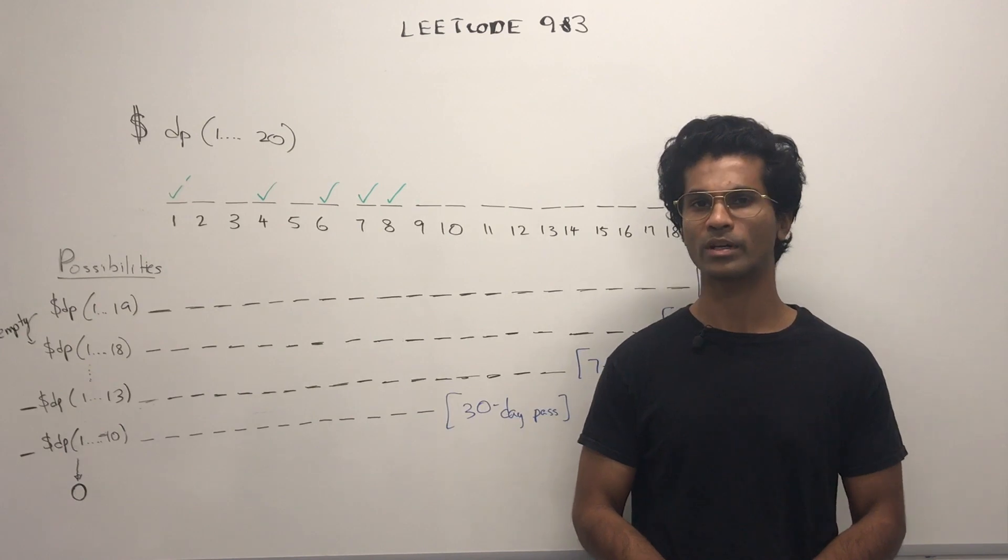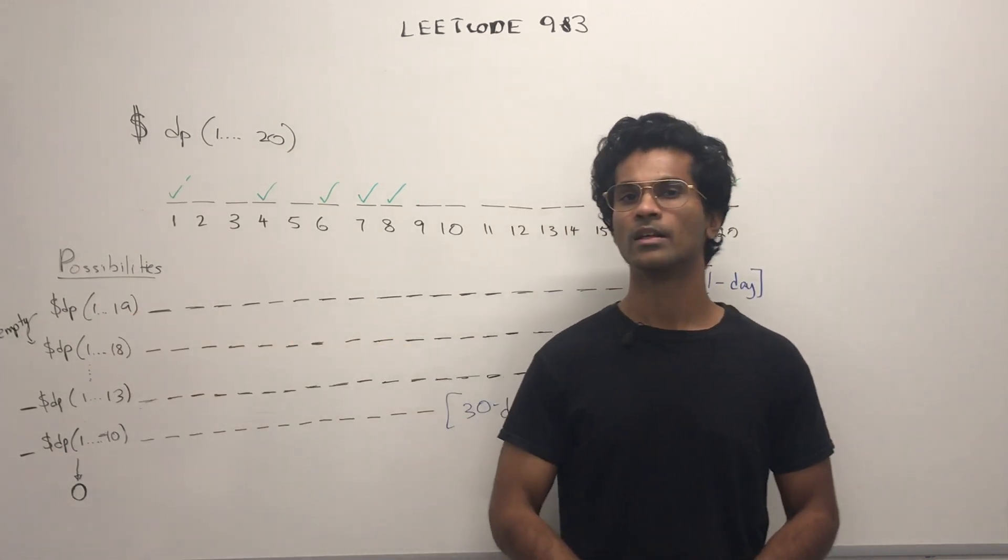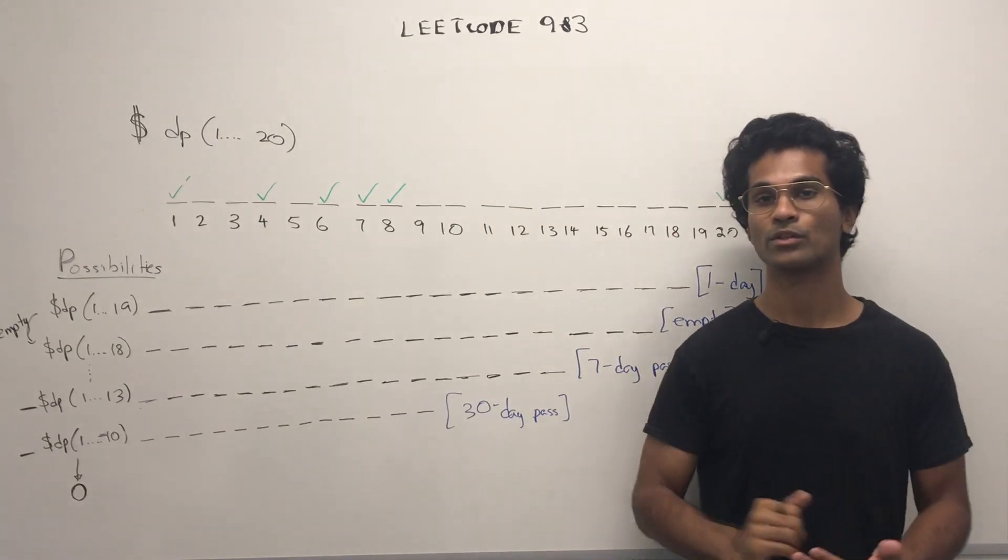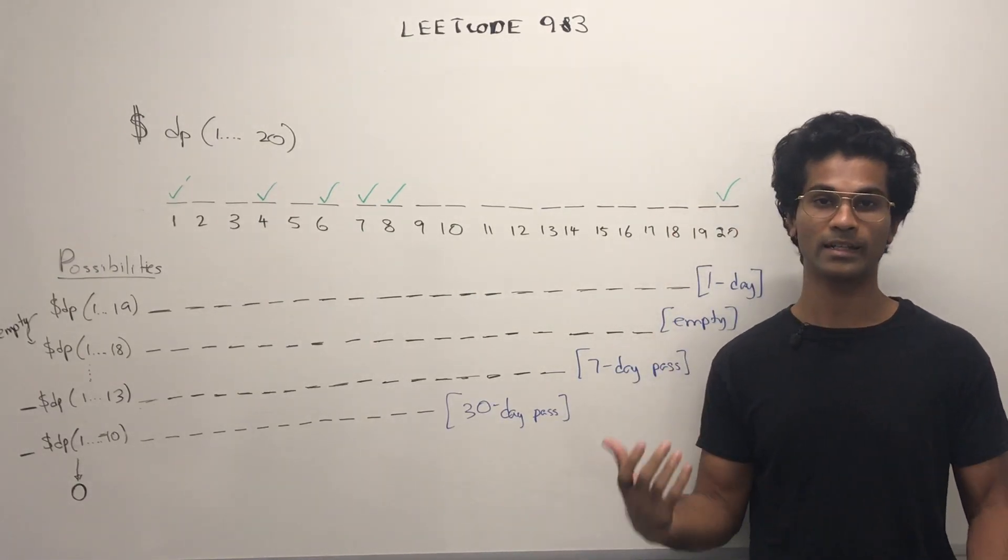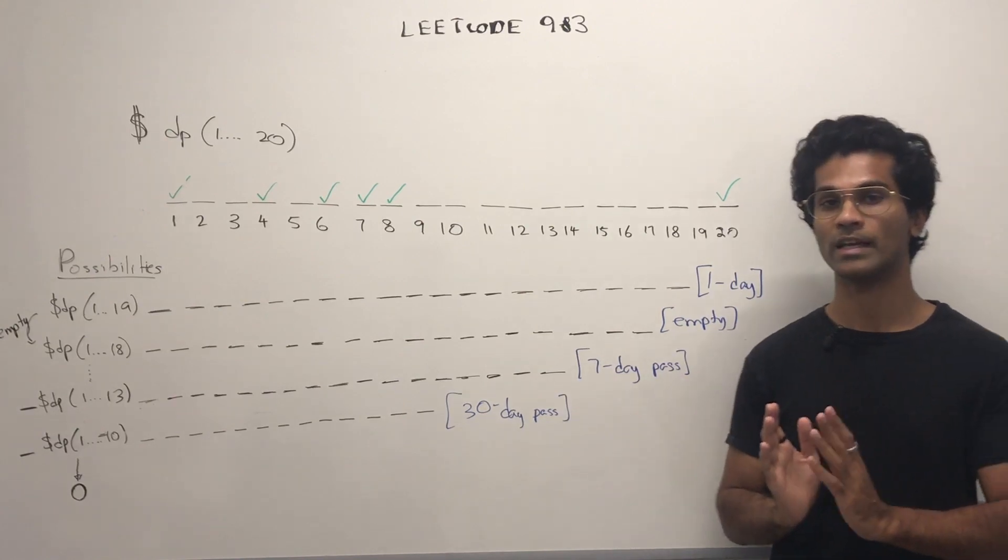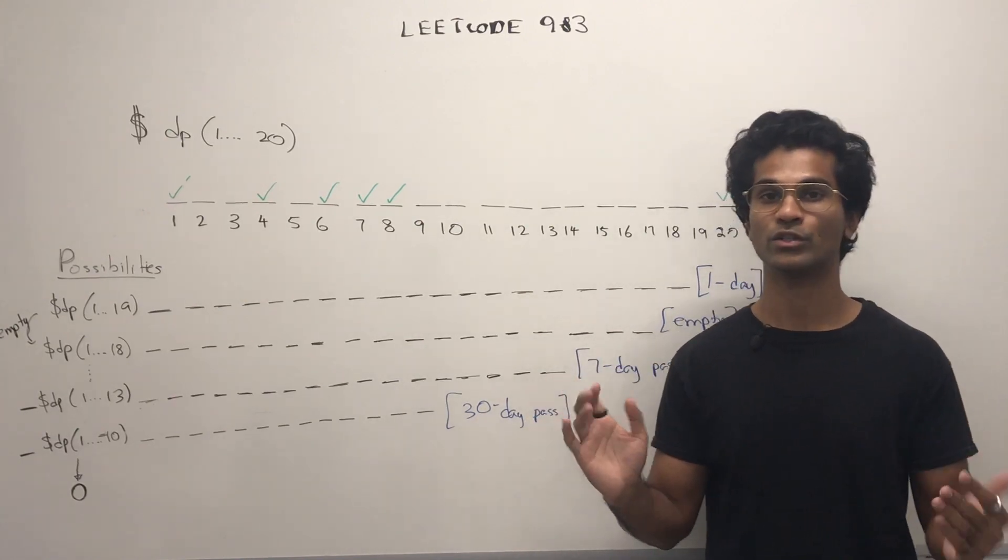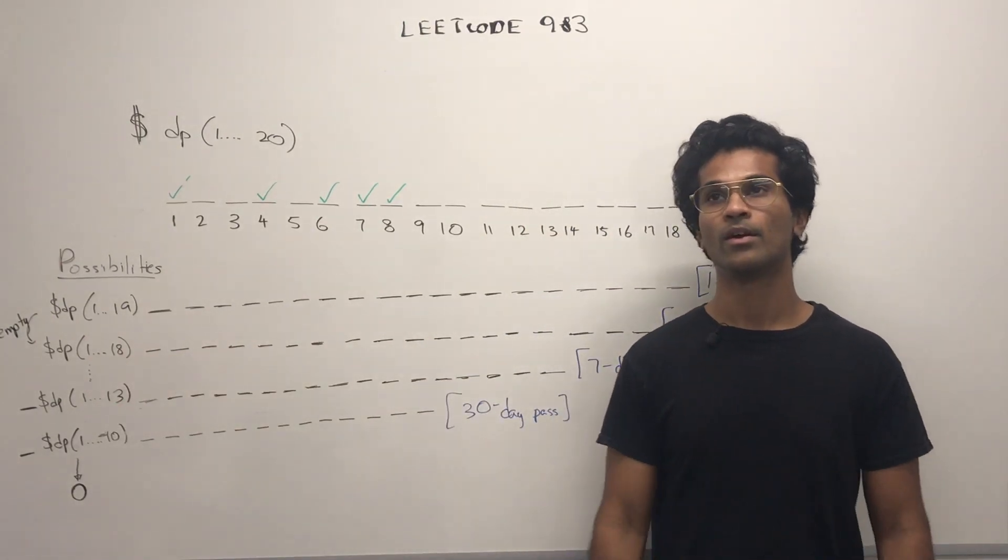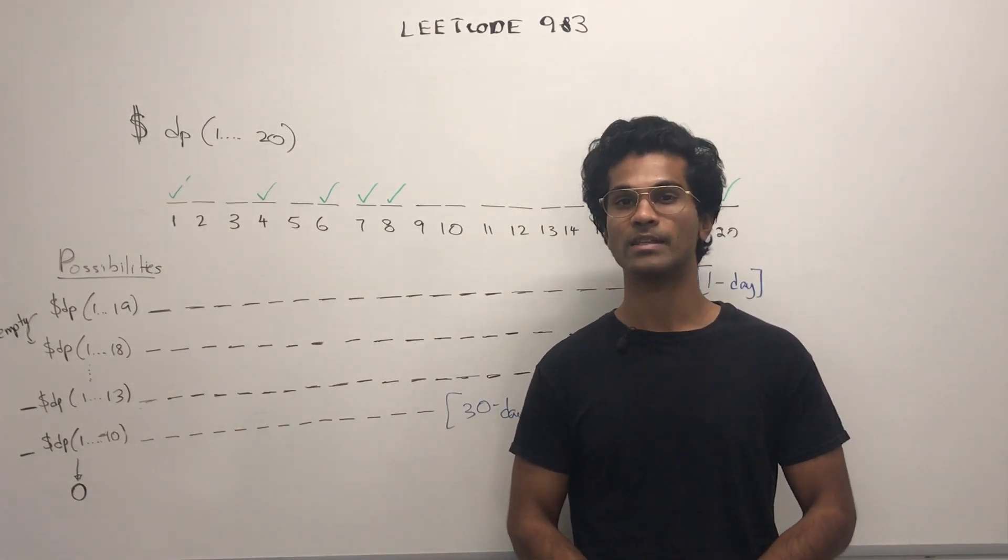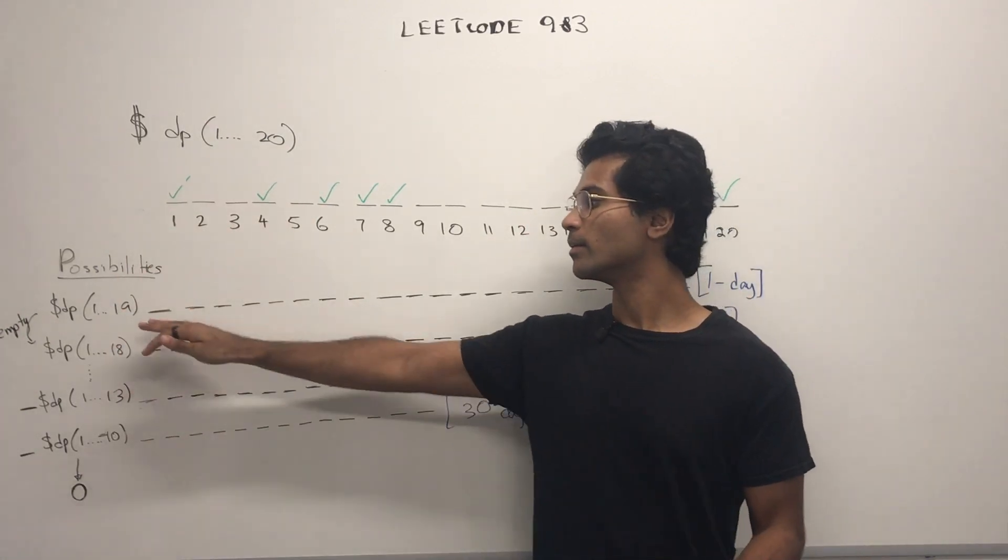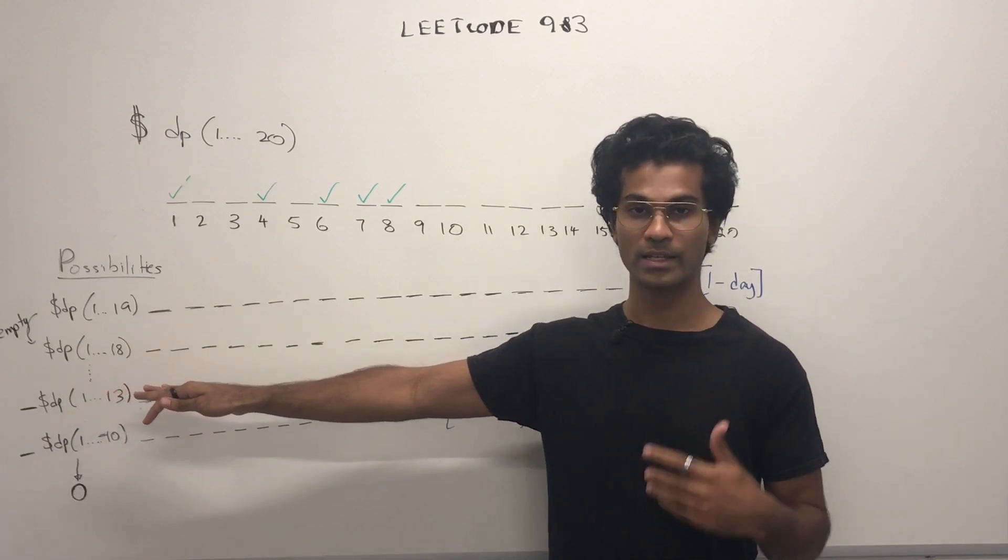Now, you might say, okay, how are we going to calculate this one? Let's look at 19. 19 is actually empty, so we don't have to travel on day 19. The DP, the minimum cost of traveling of the days ranges from 1 to 19, is just going to be 1 to 18. We don't have to worry. So right now, I've made the 20 smaller, by turning it into 19, and we know we can figure out 19, because it's the same as 1 to 18.